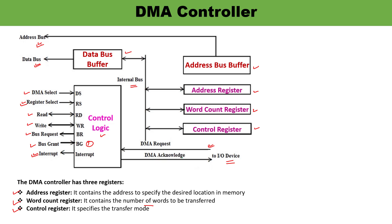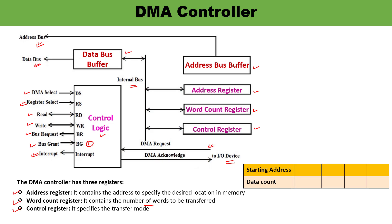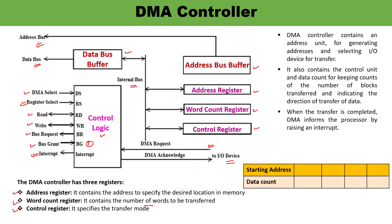The address register holds the address and the word count register holds how many data words are to be transferred. When control is received by the DMA, the starting address and data count are set. Suppose the initial memory location to be pointed is 1000, and there are a total of 50 data blocks or 50 words to be transmitted.